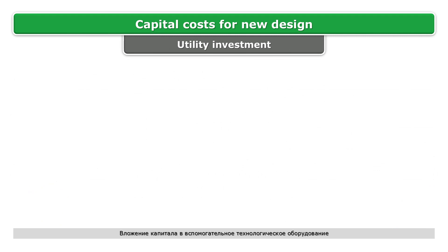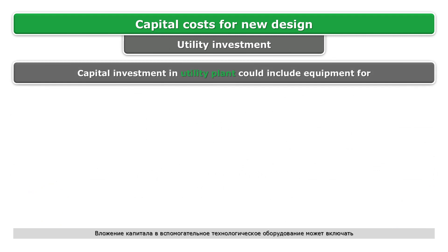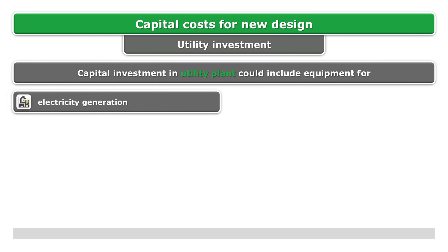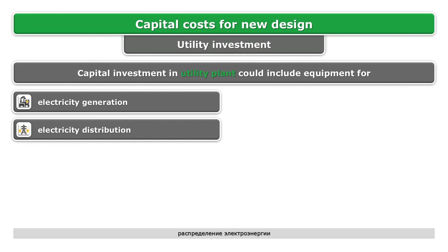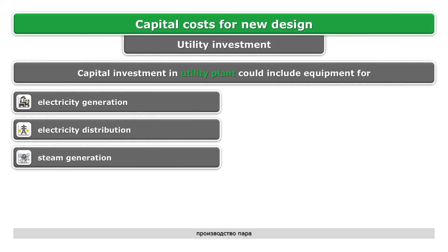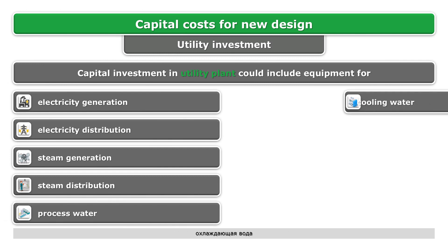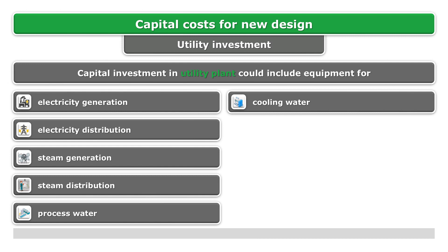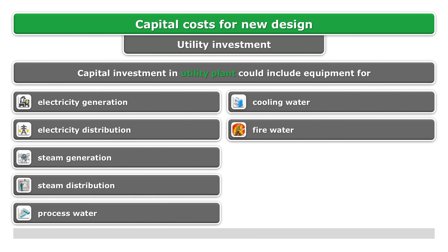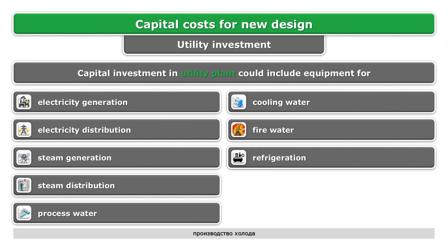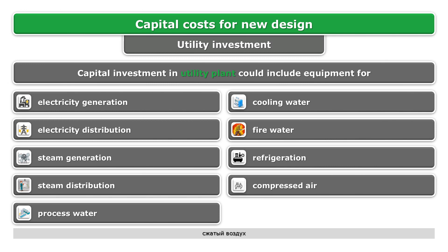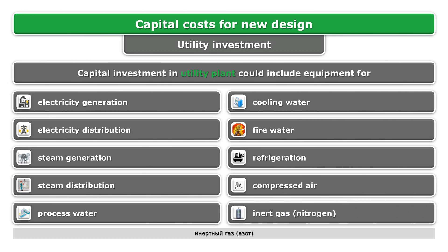Capital investment in utility plant could include equipment for electricity generation, electricity distribution, steam generation, steam distribution, process water, cooling water, fire water, refrigeration, compressed air, and inert gas (nitrogen).